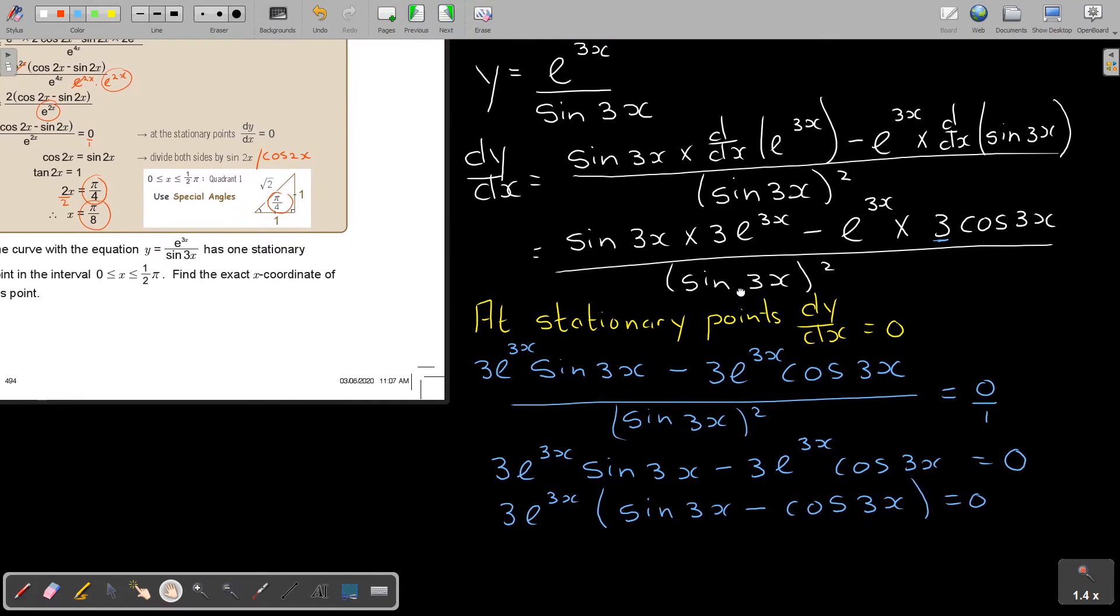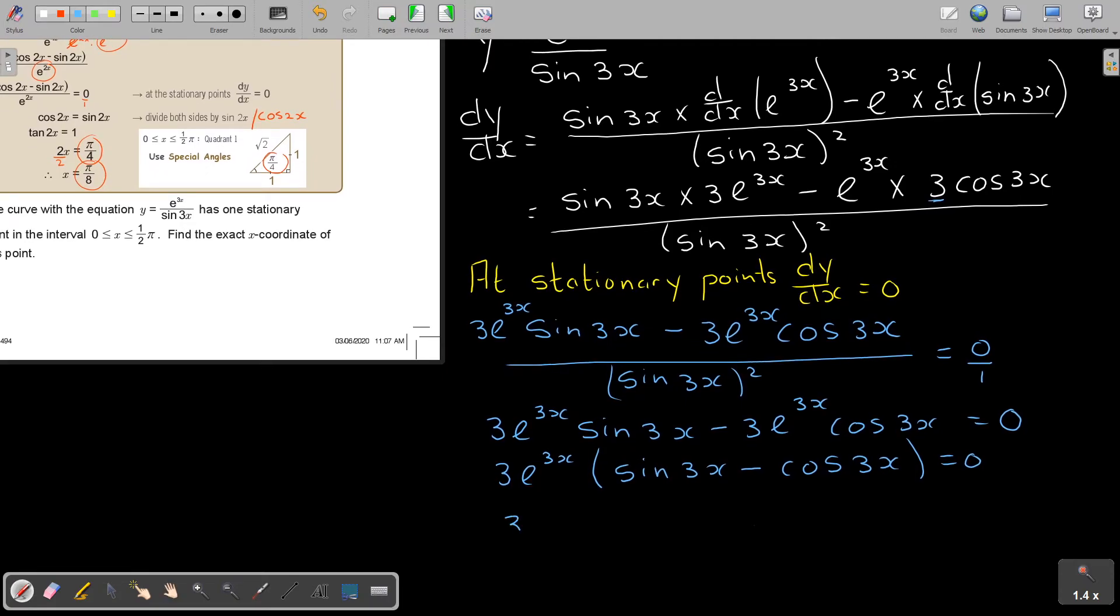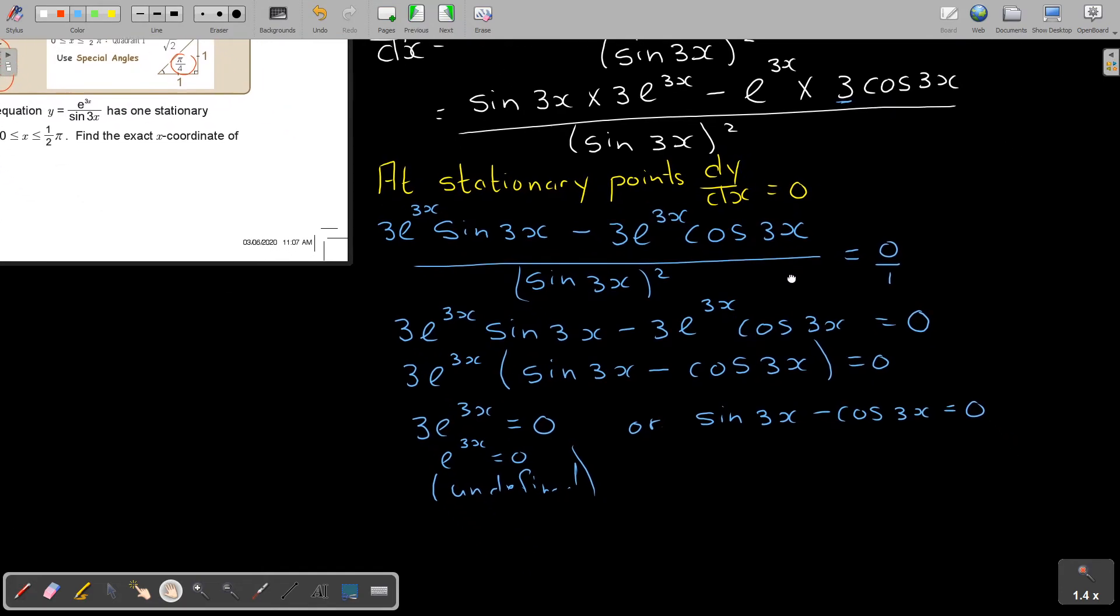And now you have 2 factors. So now you're going to have 3e^3X is equal to 0. Or, sin 3X minus cos 3X is equal to 0. Now can I just show you? If you divide by 3, you're going to end up here with 3X equals 0. If you want to take it to ln or log form, rather ln because it's E, then you're going to end up with ln 0, and that's undefined. It's going to give you a maths error. So I'm only working with this one.